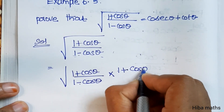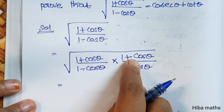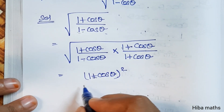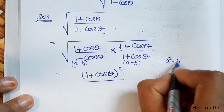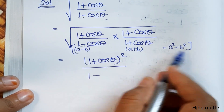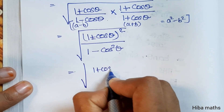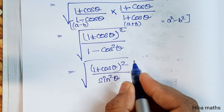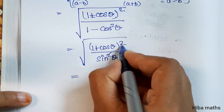So we get square root of (1 plus cos theta) squared divided by (1 minus cos theta)(1 plus cos theta). The denominator uses the identity (a minus b)(a plus b) equals a squared minus b squared, where a equals 1 and b equals cos theta. This gives us (1 plus cos theta) squared divided by (1 minus cos squared theta), which equals (1 plus cos theta) squared divided by sin squared theta. Taking the square root cancels the square.